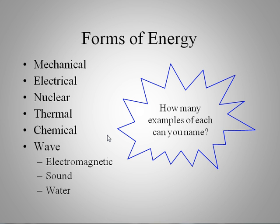How many examples of each can you name? Can you name a process or a device? For example, nuclear to electrical would be a nuclear power plant. Electrical to thermal would be a toaster. Chemical to electrical would be a battery. We have various forms of energy all around us in everyday life.